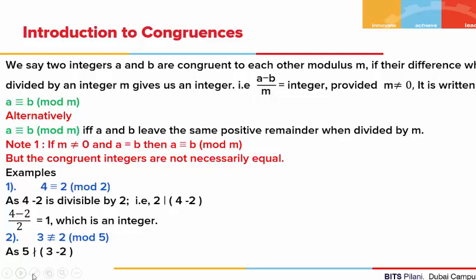This is the notation of congruence and it is quite different from the notation of equality. We can see there are three bars here. This notation was given by none other than the famous mathematician Gauss. Once again, a is congruent to b if and only if the difference of a and b is divisible by m. Here, 'mod' is used in short for modulus. Modulus in layman's language means measure, and mod m means we are dividing by m.